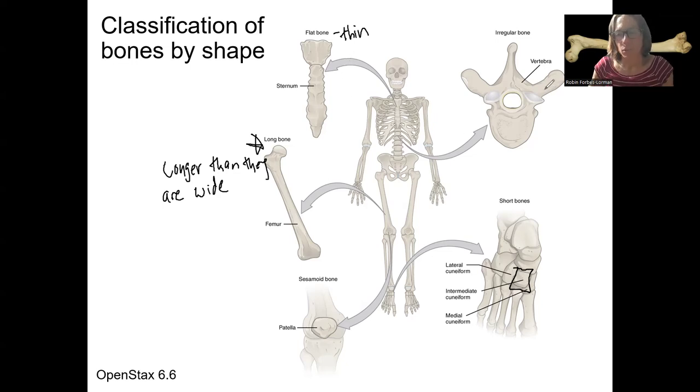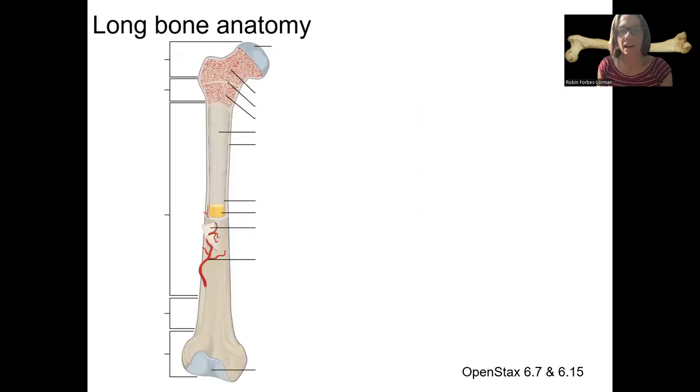Otherwise, there's different shape bones. Irregular are going to have irregular shapes. There's different types of irregular shapes. Sesamoid just refers to the patella in humans, like a sesame seed. And again, we're not going to look at the detailed anatomy of each of these. We're going to focus primarily on long bone. And that's actually where we're going next.